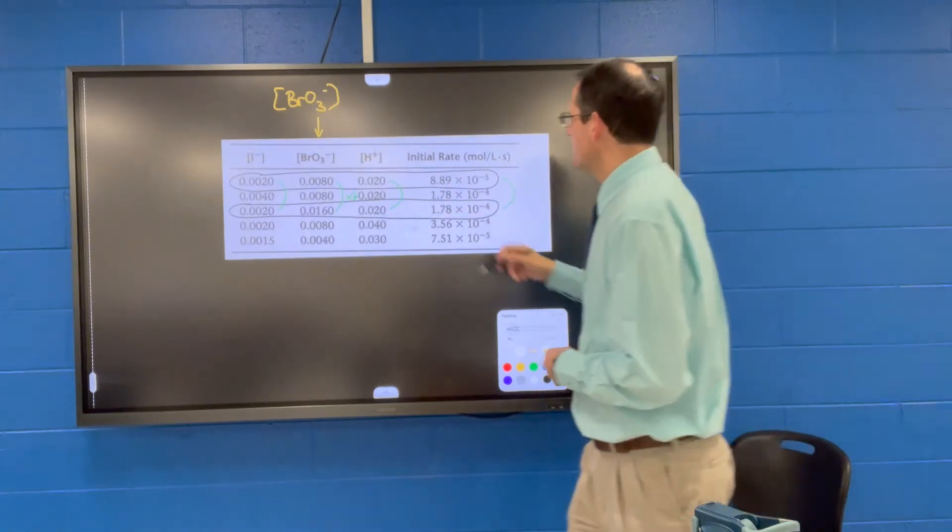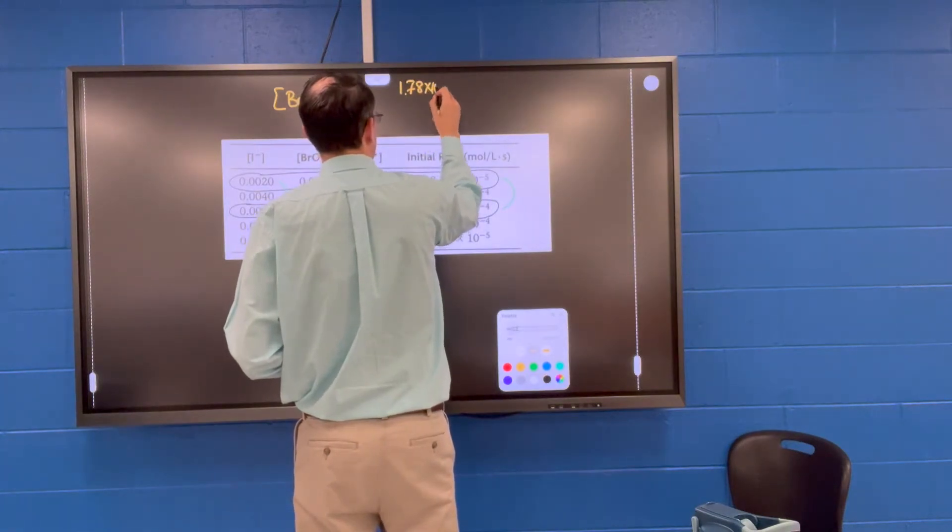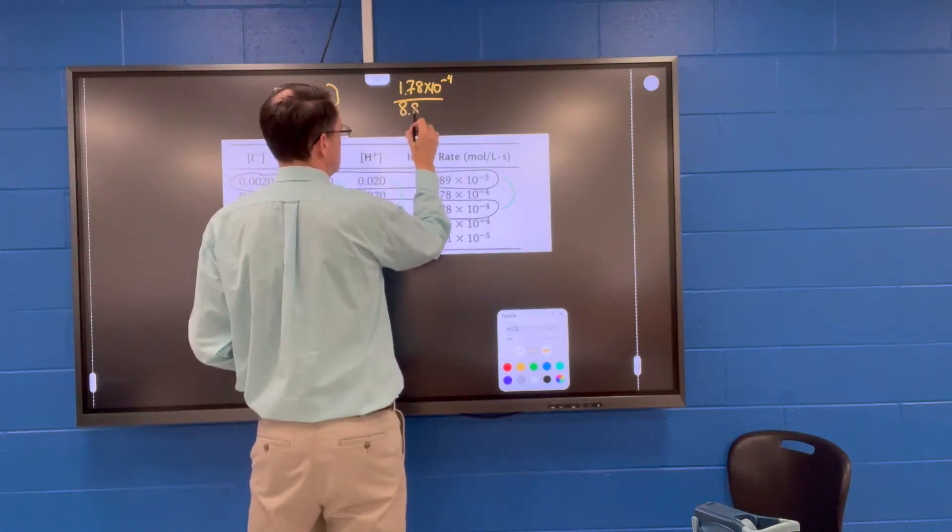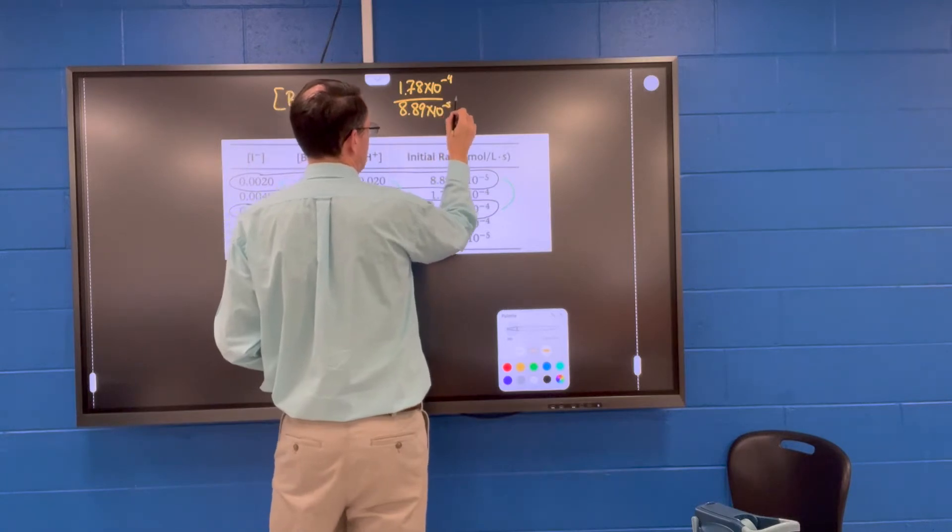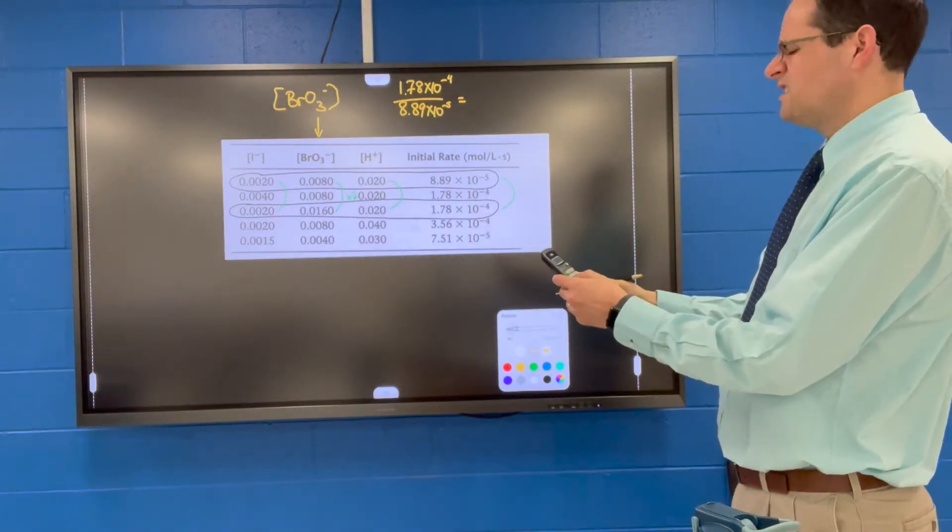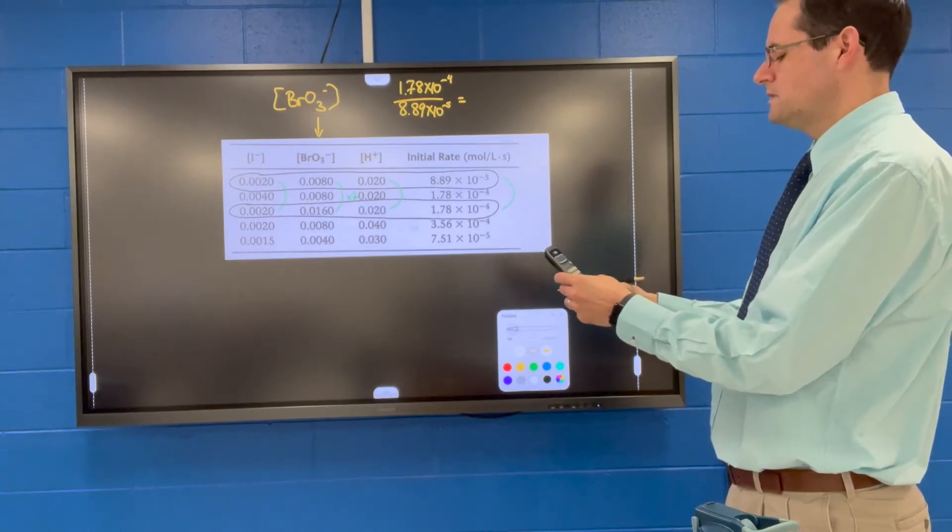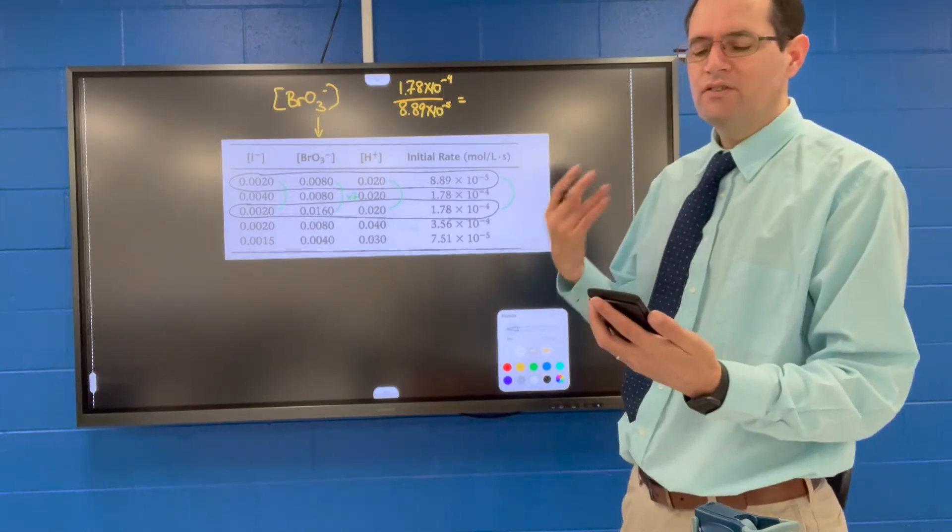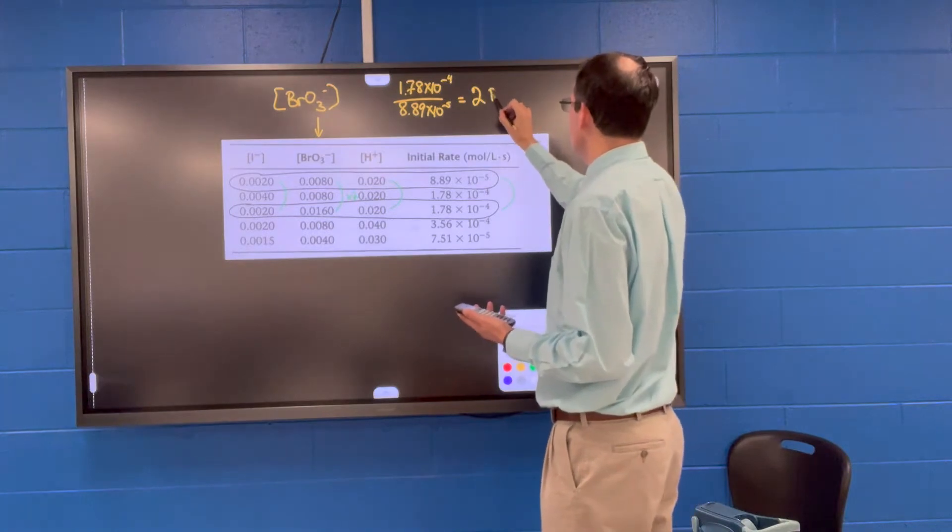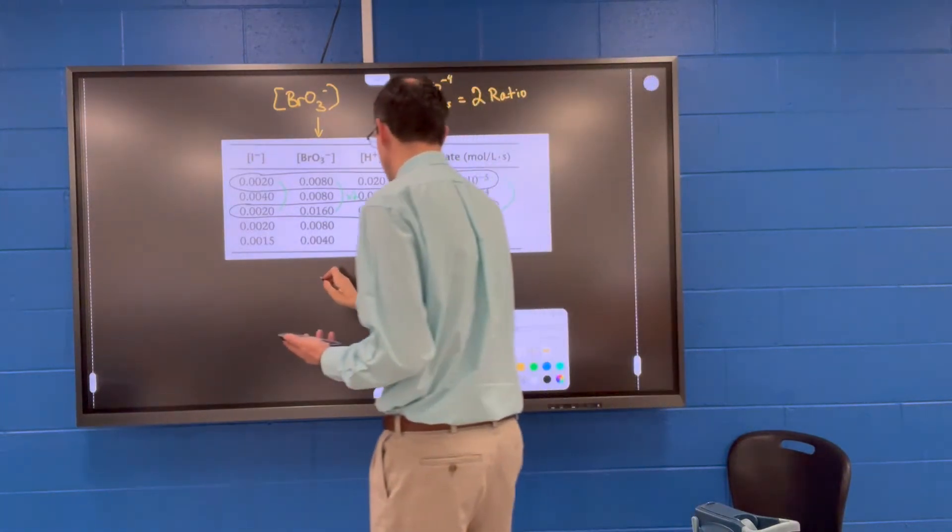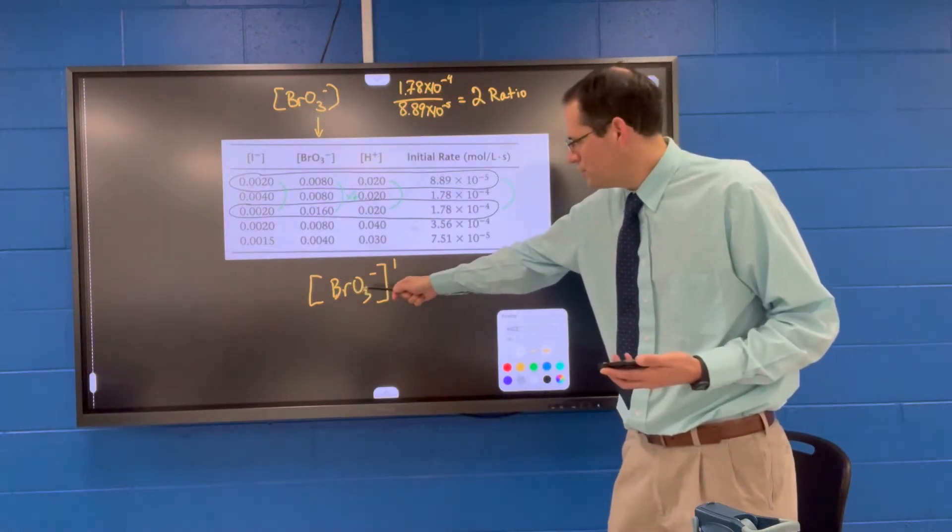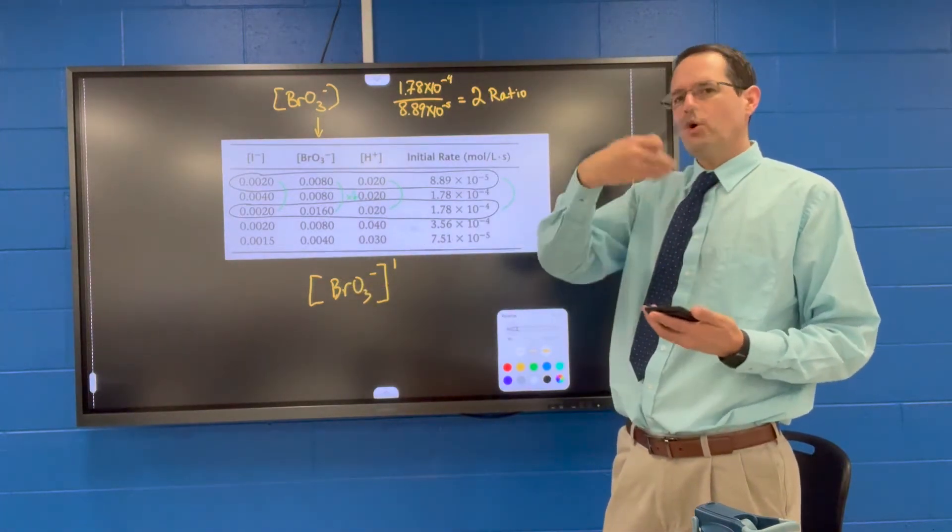So we take the larger of the rates and we divide it by the lower or smaller number. And grab your calculator and determine what that is. And I get a value of 2.002249719. So the ratio is two. So that again tells us that the order is one. Again, if we double this concentration, since it's raised only to the first power, the corresponding rate is going to be doubled. Now we need to figure out what the order is with respect to hydrogen ion.